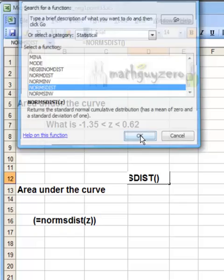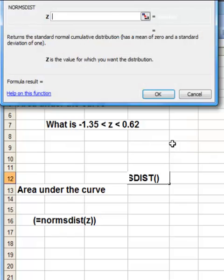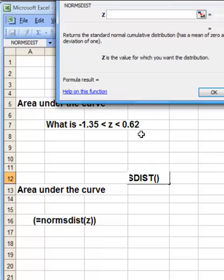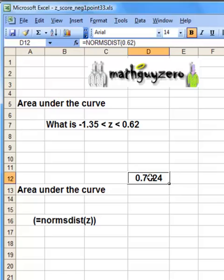This is a two-parter though. First thing you got to do is pull the greater value. That's going to be this one. You're going to do that one first, 0.62. Click OK. That's not your answer.